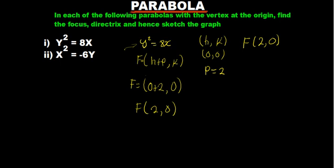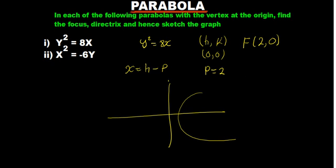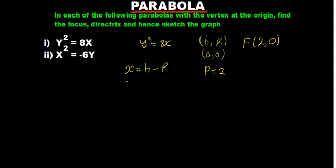Talking about the directrix: when the equation of the parabola is symmetric about the x-axis, the directrix is found using x = h minus p. Since our h is 0 and p is 2, we get x = 0 - 2, so our directrix is x = -2.